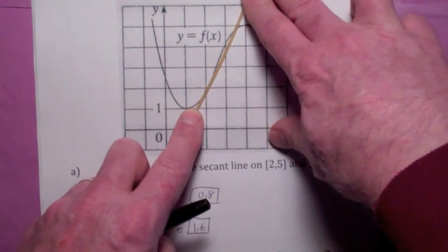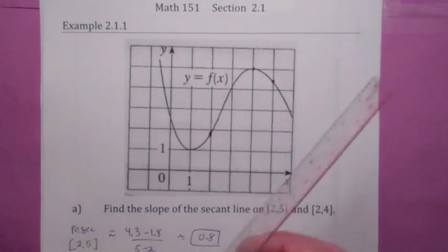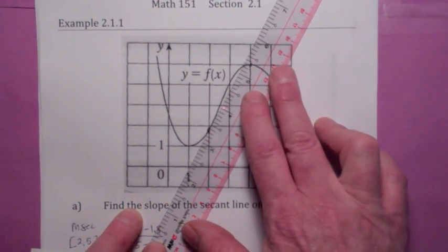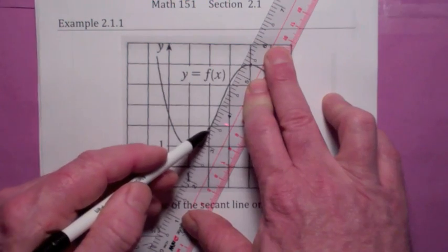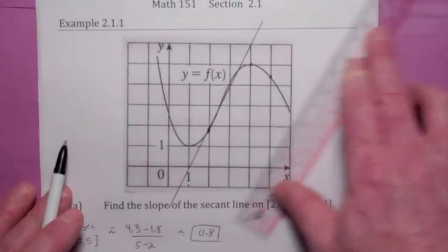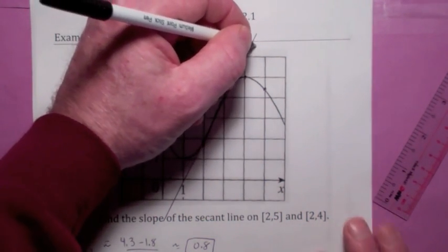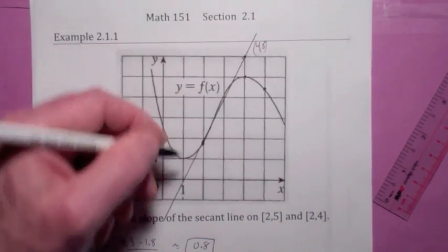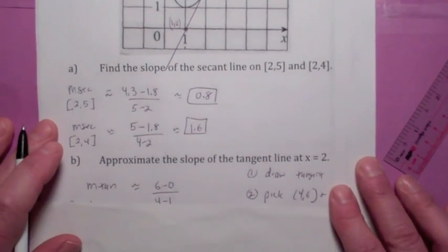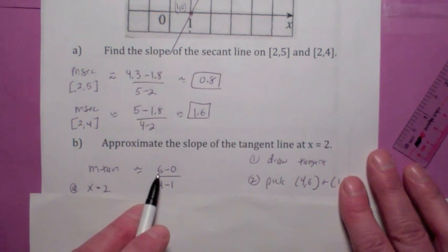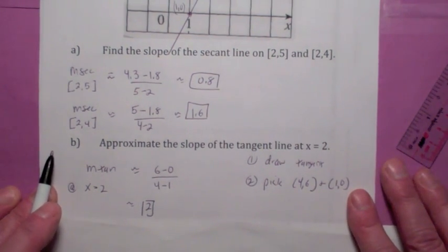We'd pick two points really close together, but that's not very accurate. So here's how we're going to approximate the slope of the tangent line at x equals 2: we take our ruler and try to draw the tangent line as best we can, making it go through the point with the same slope as the curve. Then we pick two points that are far apart and easy to read. This point looks like about (4, 6) and the second point down here is about (1, 0). Using those two points, the slope of the tangent line at x equals 2 is about 6 minus 0 divided by 4 minus 1, which comes out to about 2.